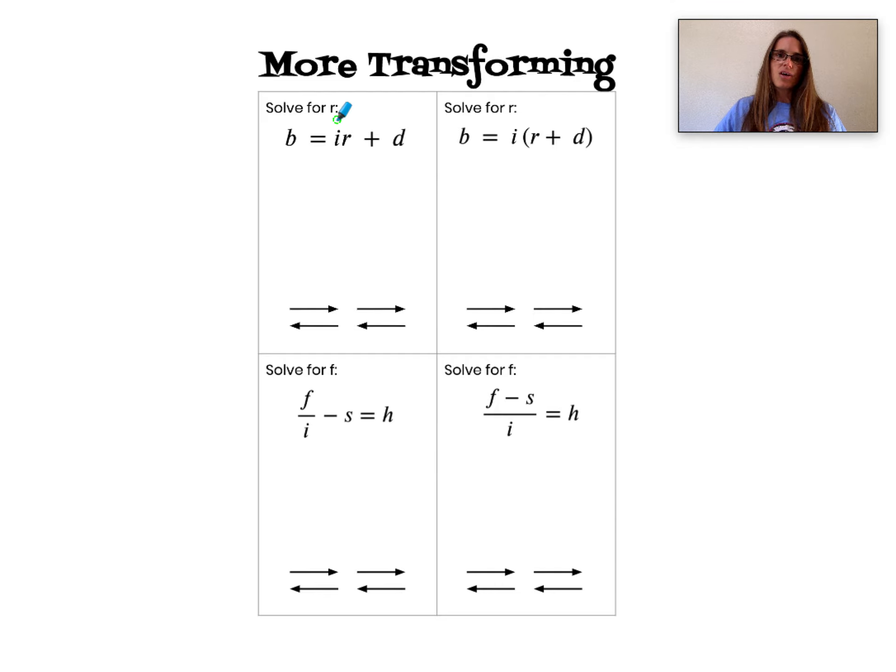Example number one. Solve for r. Let's begin by tracing through what's happening to r in the equation. First I'm multiplying r times i and then I'm adding d. So r times i plus d.